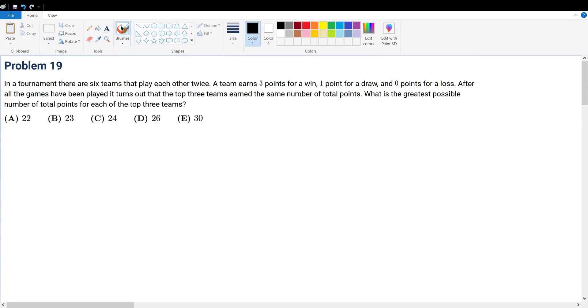Problem 19. In a tournament, there are 6 teams that play each other twice. Let's assume, before we even begin, that these teams are A, B, C, D, E, and F.